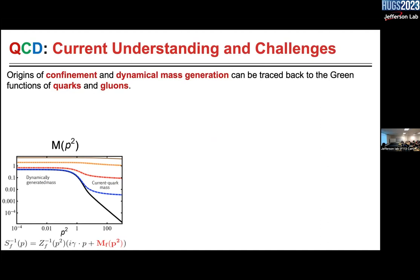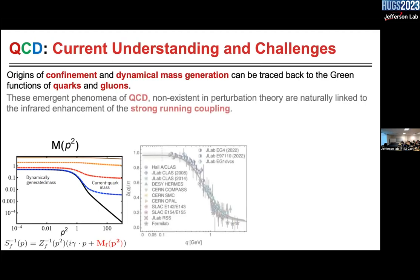The origin of confinement and dynamical mass generation could possibly be traced back to the Green functions of quarks and gluons. This is the graph where we left last time. We have also seen the evolution of the running coupling towards the infrared, and that's what makes it all interesting.